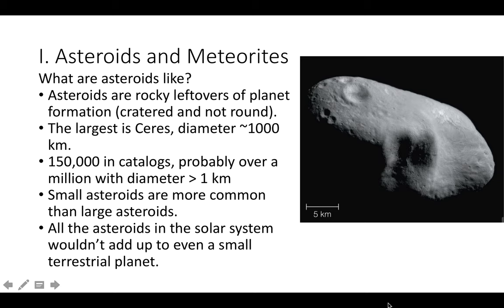So, what are asteroids like? Asteroids are rocky — they're usually leftovers of planet formation, which is why a lot of them are cratered and not perfectly round. The largest asteroid is Ceres, 1,000 kilometers in diameter. We have hundreds of thousands cataloged, probably over a million with a diameter less than a kilometer. Small asteroids are more common than large ones, and all the asteroids in the solar system wouldn't even add up to a small terrestrial planet.